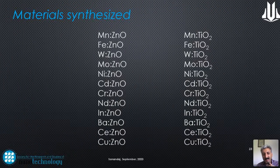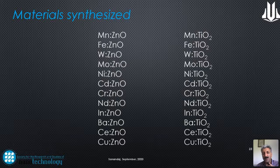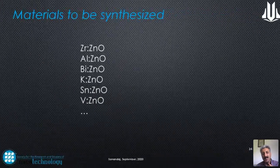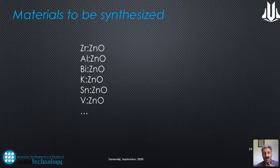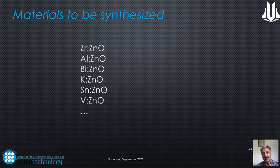Materials synthesized include manganese, iron, tungsten, molybdenum, nickel, cadmium, chromium, indium, barium, cerium, and copper doped zinc oxide; and the same dopants applied to titanium dioxide including Mn, Fe, W, Mo, Ni, Cd, Cr, In, Ba, Ce, and Cu doped TiO2. Currently, MSc students are working on zirconium doped zinc oxide, and PhD work covers aluminum, bismuth, potassium, and vanadium, mixed with iron to introduce magnetic properties.